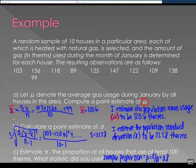8 out of 10. And then show me that that equals .8. And then I ran out of room, but you of course would write, I estimate the population proportion of all houses that use at least 100 therms, parentheses, pi, to be .8.